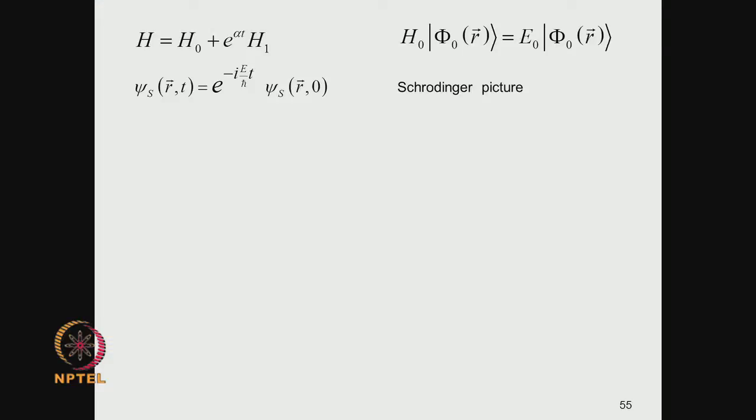Greetings, we will discuss the Gelman and Lowe theorem, which I mentioned in the previous class. Our focus is on the treatment of electron correlations, which we are very concerned about. We know that Hartree-Fock is not able to deal with these electron correlations. The Hartree-Fock certainly took account of the statistical exchange correlations, but not the Coulomb correlations.